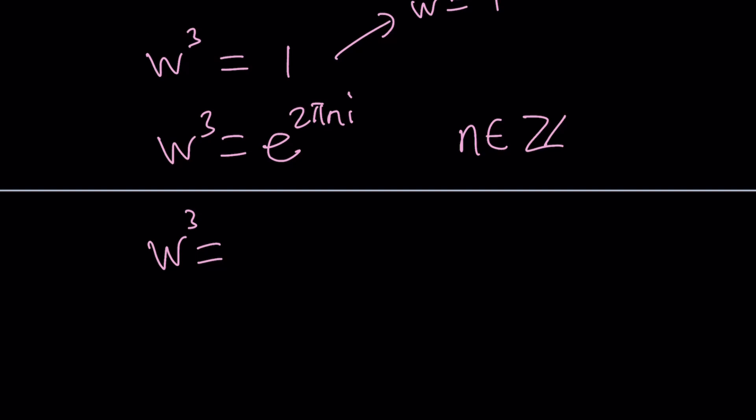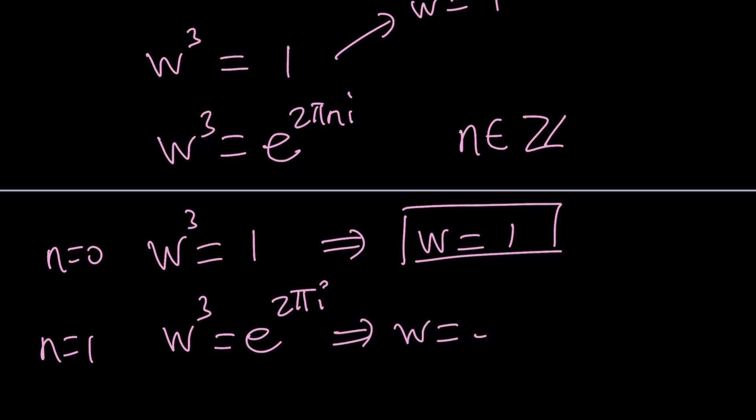So the first solution basically comes from just dividing everything by... Well, I would probably just do this first. Let's replace n with 0. That's going to give us 1 e to the power 0. And from here, we can safely say that W equals 1 is going to work. If n is equal to 1, this is going to give us W cubed equals e to the power 2 pi i. And if you divide both sides by 3, you're going to get W equals e to the power 2 pi i over 3.